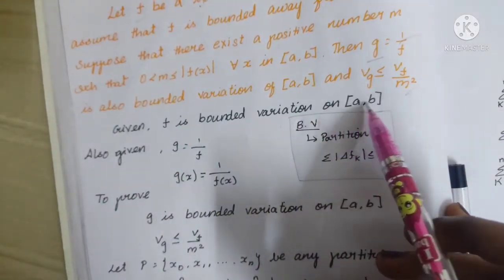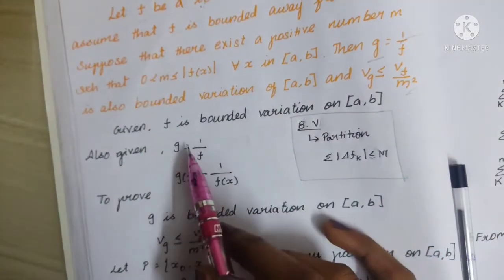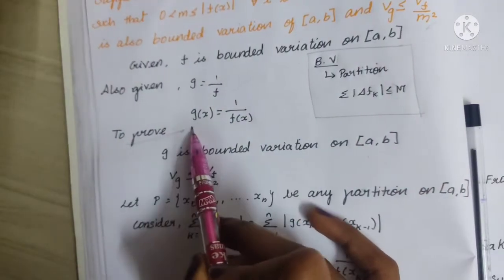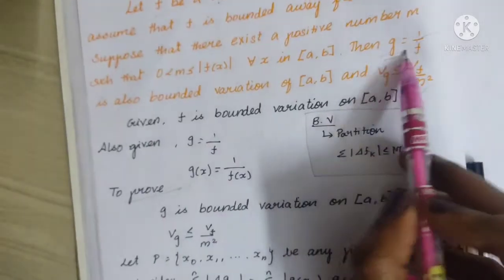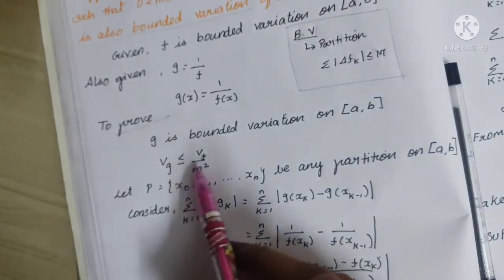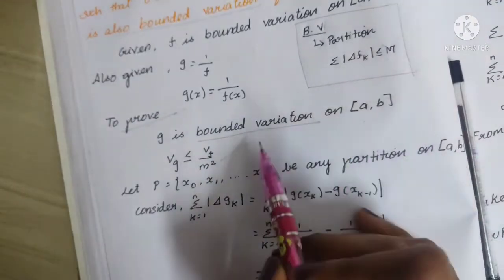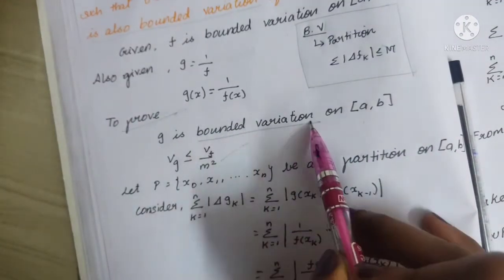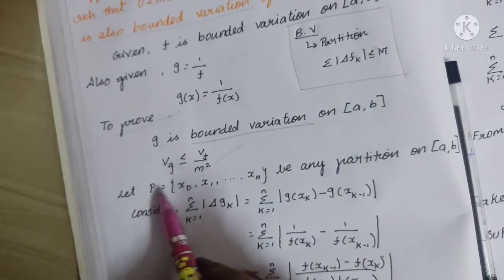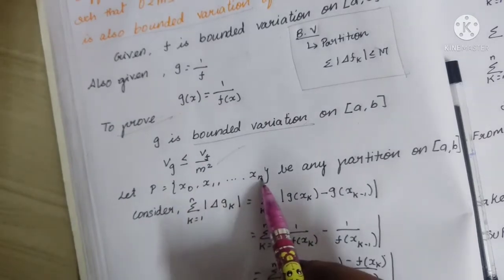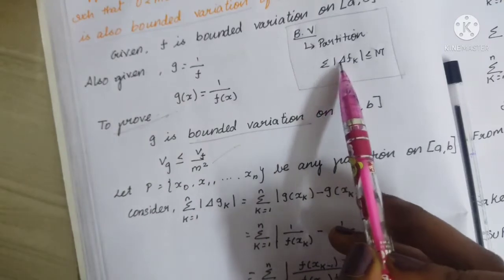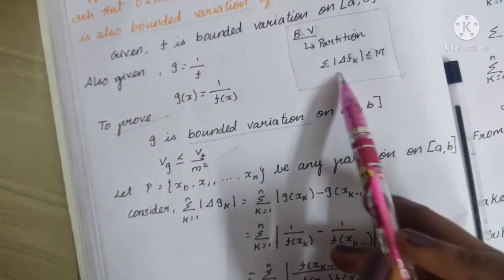Given f is of bounded variation on the closed interval [a, b], and g = 1/f. We will prove g is bounded and that Vg ≤ Vf / m². Let P = {x₀, x₁, …, xₙ} be a partition of the closed interval [a, b], with the condition that summation of |Δf_k| ≤ M.